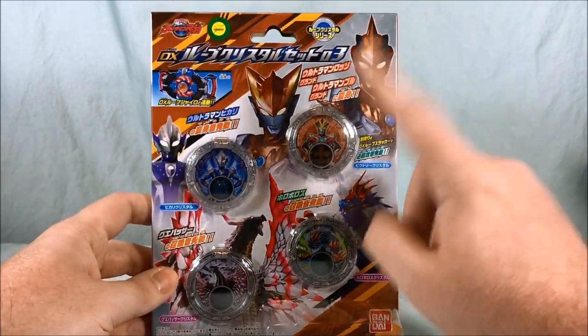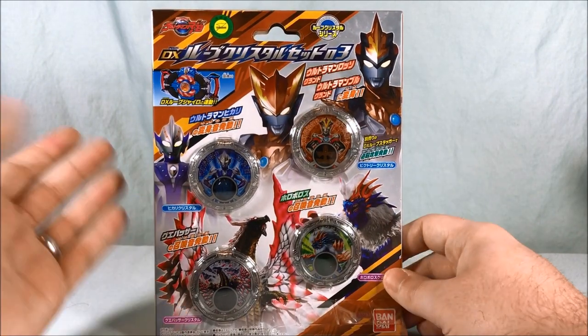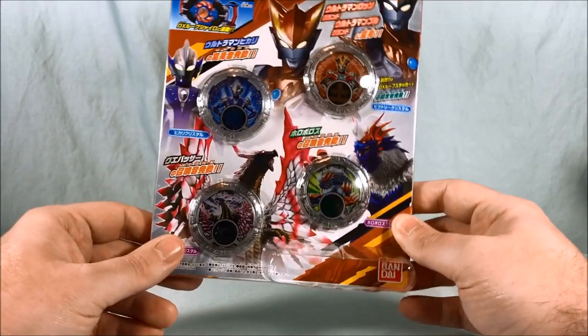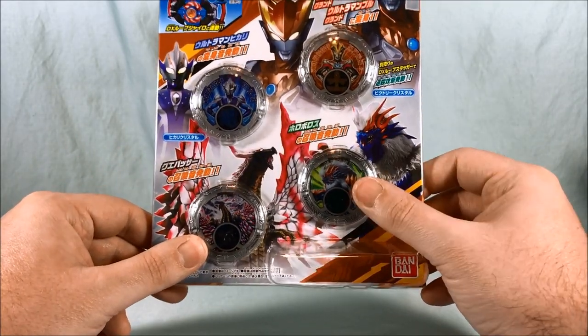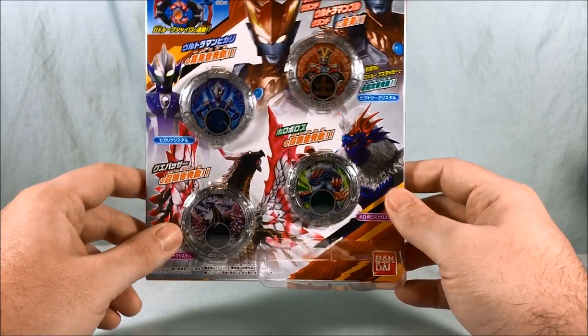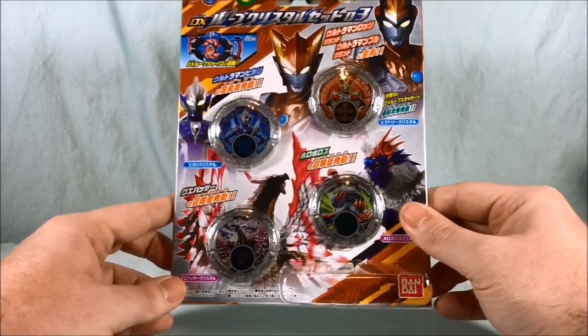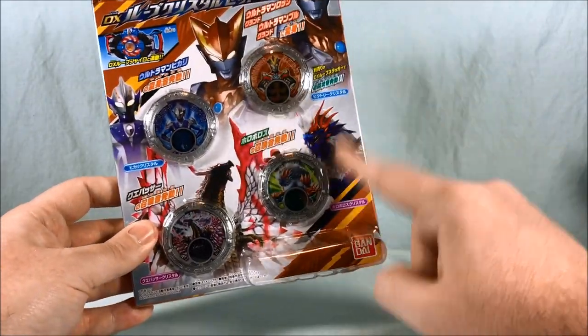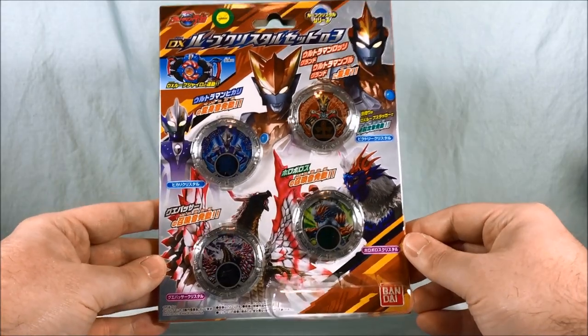Most notably contains Ultraman Victory which allows them to transform into the ground form you see there. I also get Ultraman Hikari and then two Kaiju Crystals down here, Guebasa and Horoboros. I hope I'm pronouncing that correctly. I really like this monster. I think the design is really cool, cool color scheme, all that kind of stuff. I have a vinyl doll review of him coming up probably later this week so very cool. Yeah those are the four you get in the package here.